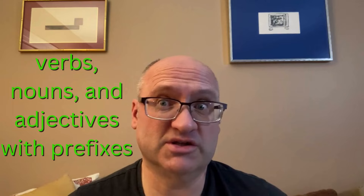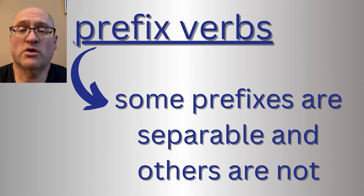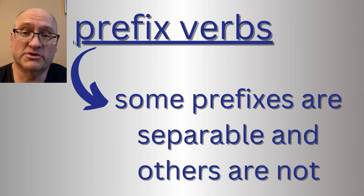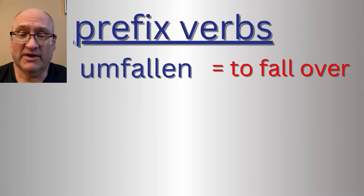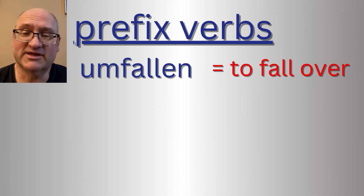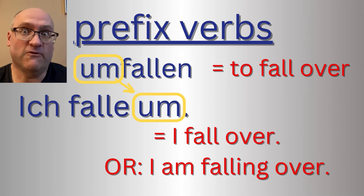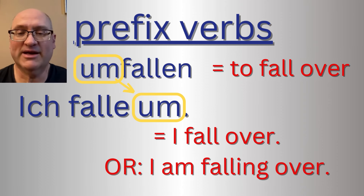Let's go over a few verbs that have prefixes, and some nouns and adjectives that go along with them. Some of these verbs have separable prefixes and some of them don't. For instance, the verb 'umfallen,' which means 'to fall over,' has a separable prefix. So in a sentence, I could say 'ich falle um' — I fall over. You can see how the 'um' goes to the end of the sentence.